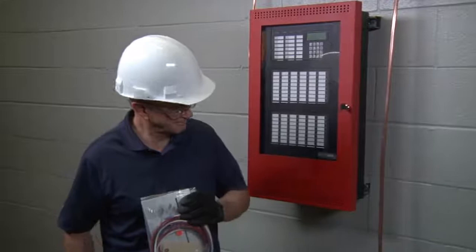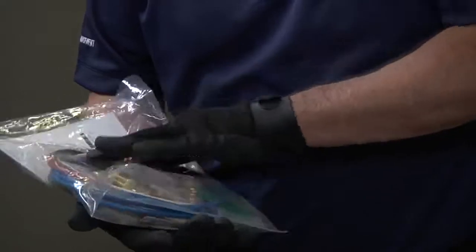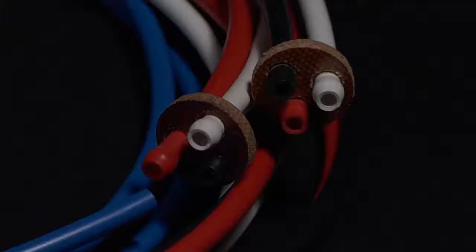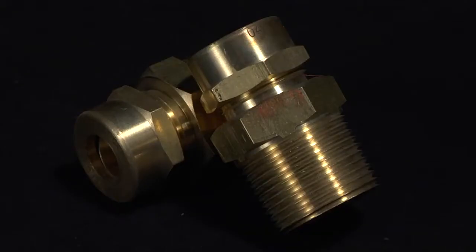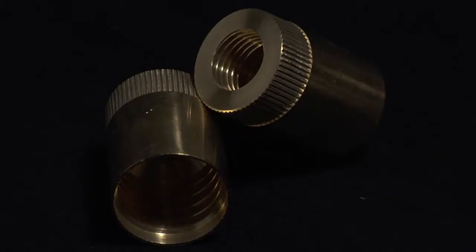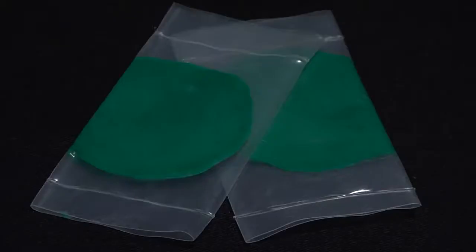Before we begin, let's double-check that your PyroPak kit contains all the necessary items you will need in order to terminate the cable correctly. Inside your kit you should find two spacer disc and insulating sleeve assemblies, two brass gland connectors, two brass self-threading pots, two torque tags, and one, two, four, or six packs of mastic sealing compound depending on the pot size.